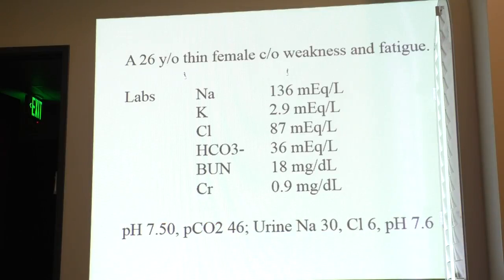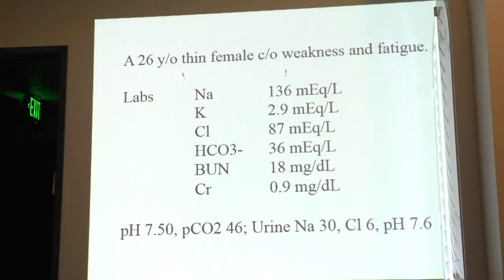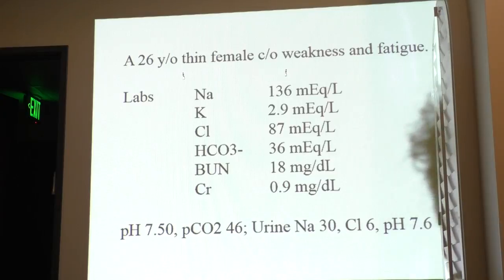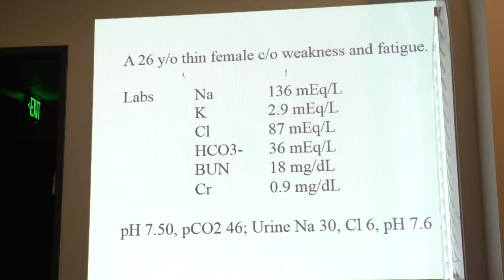Next case: 26-year-old thin female, complains of weakness and fatigue. Labs: sodium 136, potassium 2.9, chloride 87, bicarb 36, pH 7.50, pCO2 46, urine sodium 30, urine chloride 6, urine pH 7.6. So first thing — bicarb is 36 and it's high, so it's either metabolic alkalosis or respiratory acidosis. Then pH 7.5 is high, so it's metabolic alkalosis. And the urine chloride is less than 25, so this is chloride-sensitive.